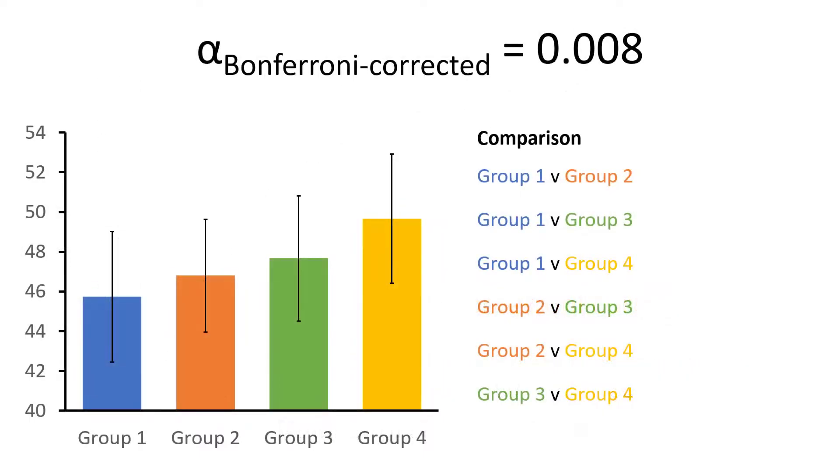Let me now return back to my previous example of performing post-hoc tests on the four groups. Say we performed separate t-tests for each comparison and found the following p-values.